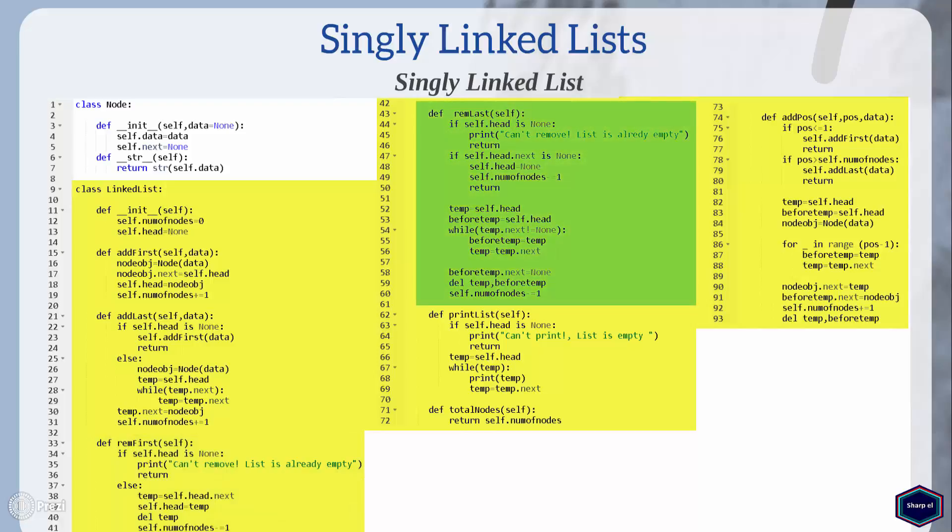In my remove_last method I check for two different conditions: if the list is already empty, and if the list contains only one node. If my list contains more than two nodes, then I look for the second last node in the list and then set its next attribute to none.